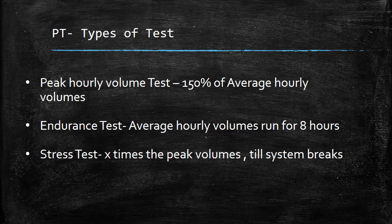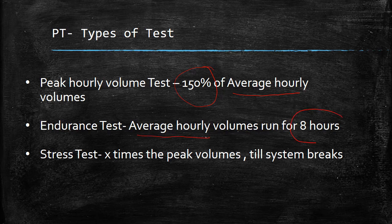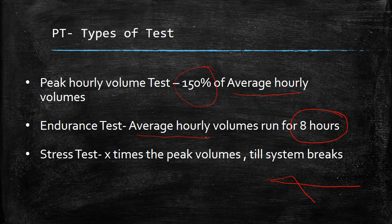There are three types of tests. First, the Peak Hourly Volume test — based on average hourly volumes from past history, you increase it by 150% and verify system stability. Second, the Sustained test — you run the average hourly volumes for 8 hours (typical business hours) and verify that response time remains consistent throughout without drooping. Third, the Stress test — you pump in multiples of peak volumes until the system breaks, identifying the break point of the system.